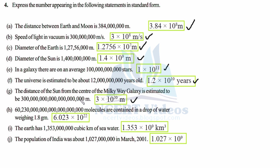Part (h): the number of molecules contained in a drop of water weighing 1.8 grams — you'll study this in science class. Significant digits are 6, 0, 2, 3 — write 6.023. Count all digits in pairs: 1, 2, 3, 4, 5, 6, 7 — that is 3 pairs giving 21 digits, then 22, 23 total — and 23 minus 1 is 22. So the number of molecules is 6.023 × 10²² .